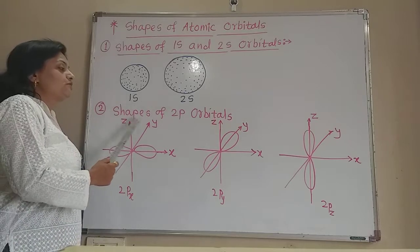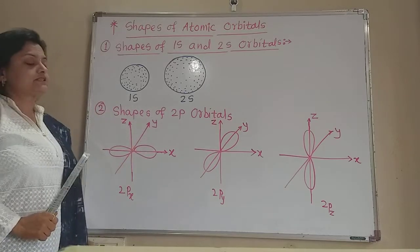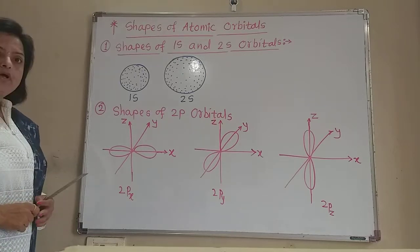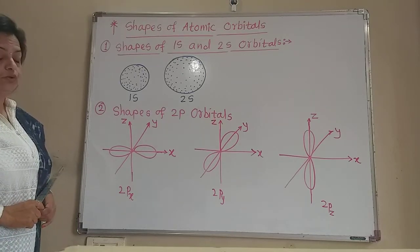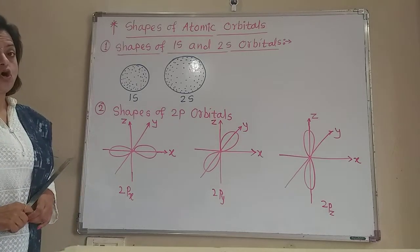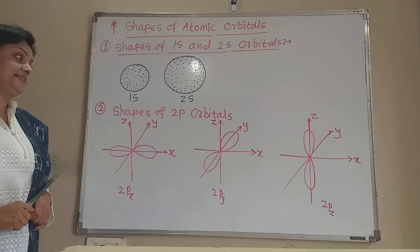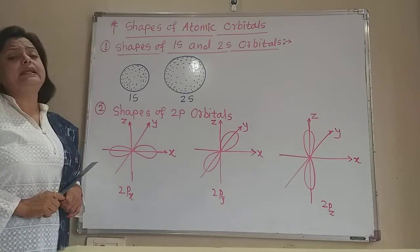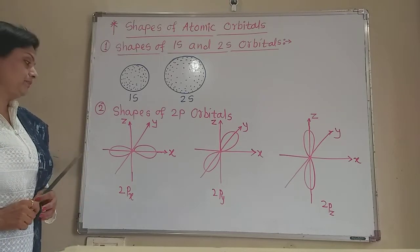Now come to the shapes of 2p orbitals. Here I draw the shapes of 2p orbitals. There are three types of 2p orbitals around the x, y, and z axes. Any p orbital has a dumbbell shape.